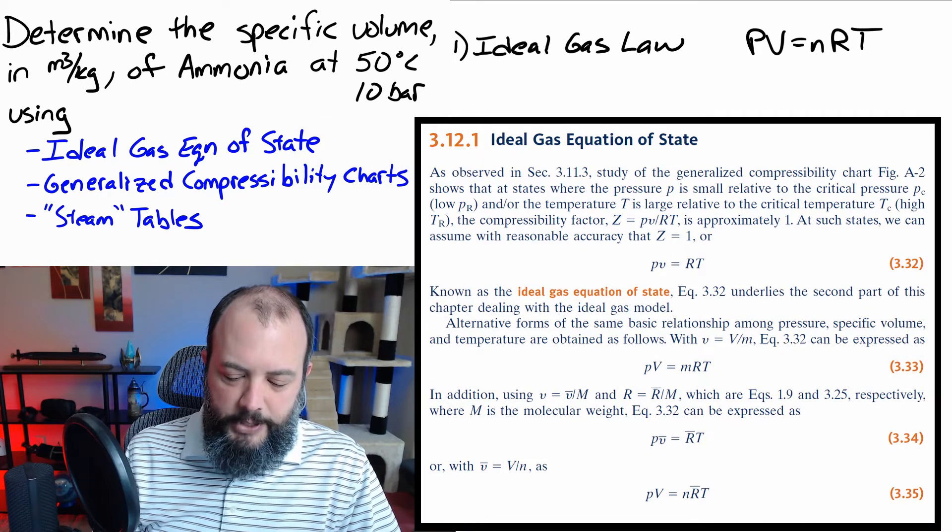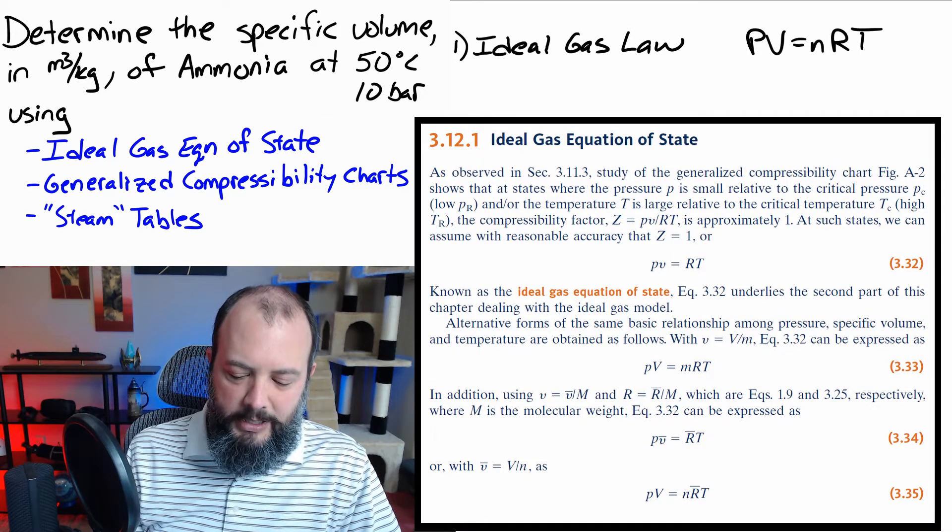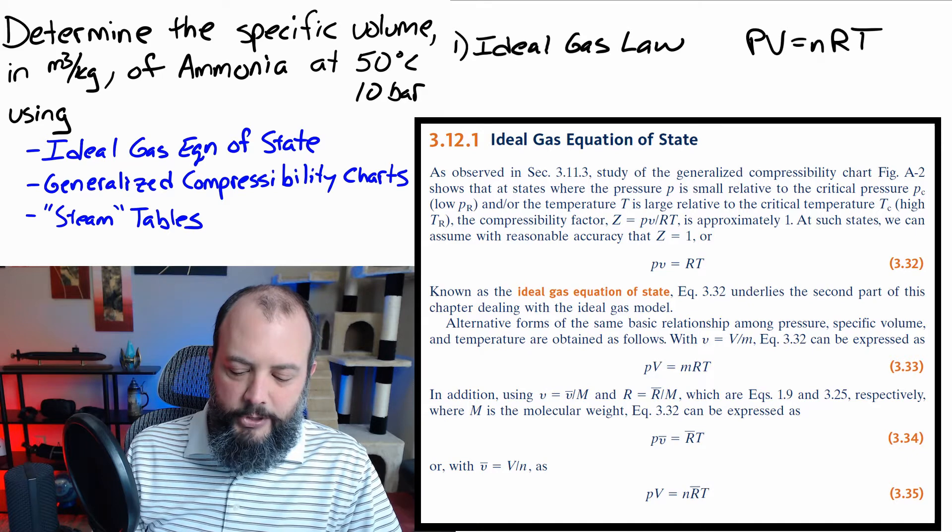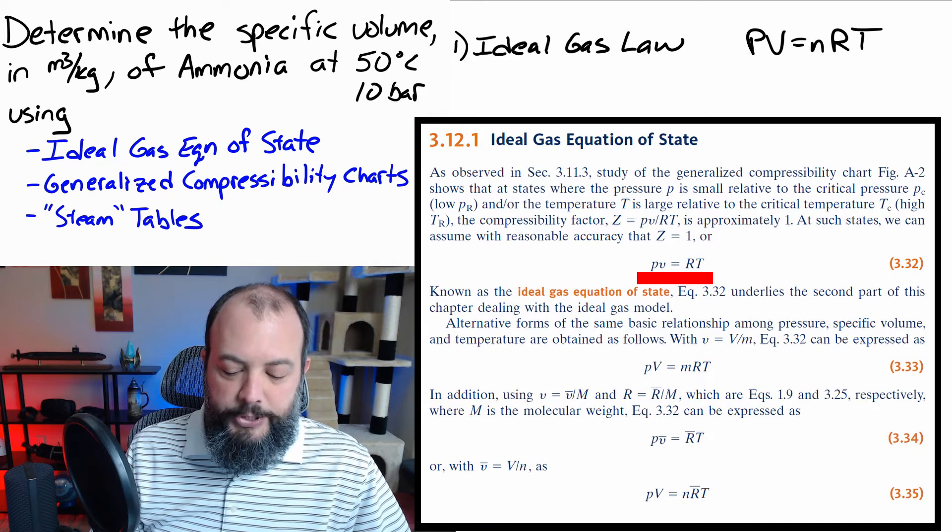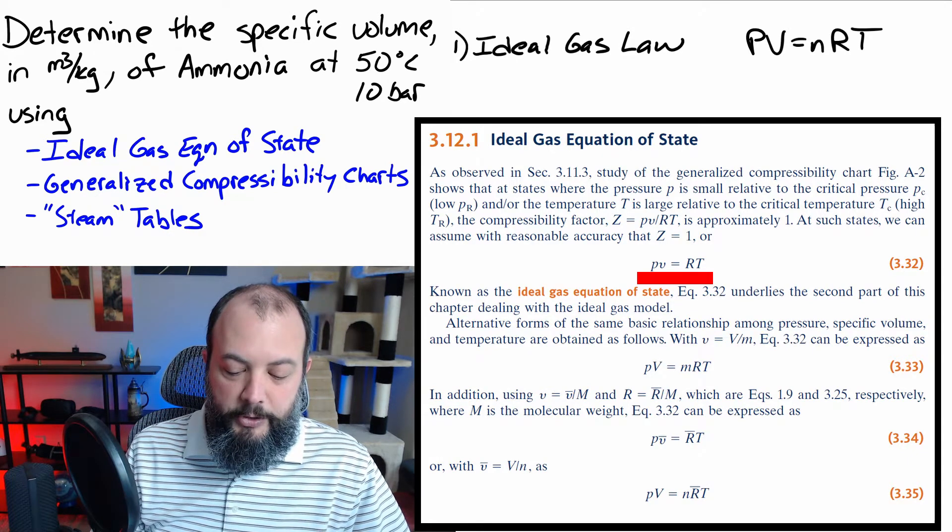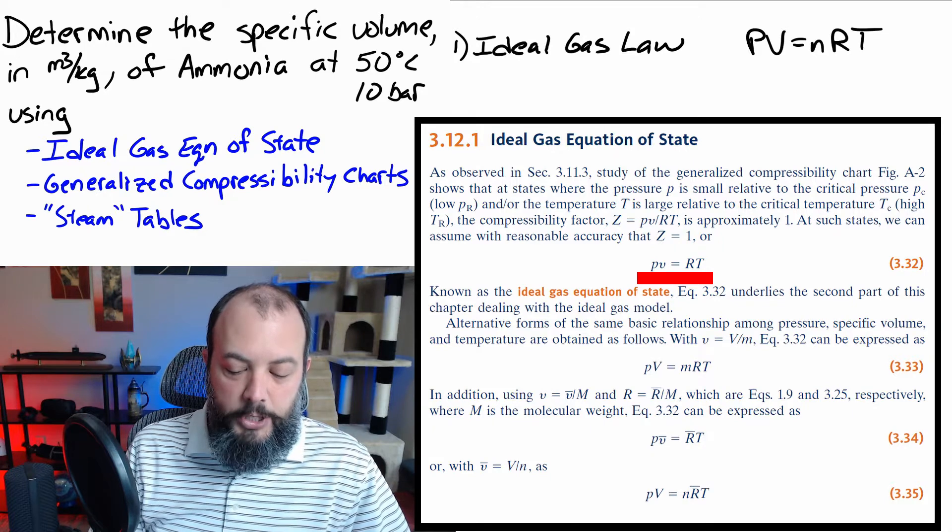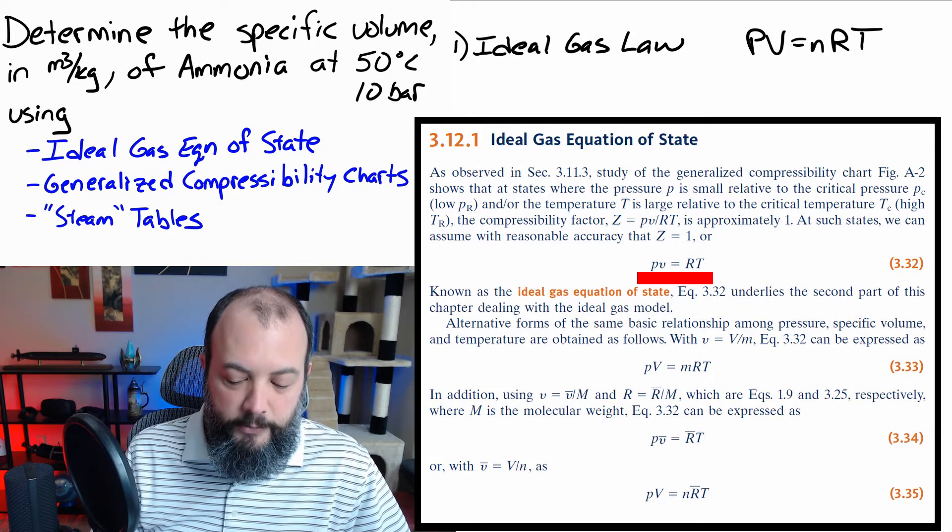So, I'm using Moran's Fundamentals of Thermodynamics textbook. And on this page, we have several different versions of the equation. We can use the very first equation. It's simplest with only four terms, and it's already in terms of specific volume, which is the final answer we're looking for.